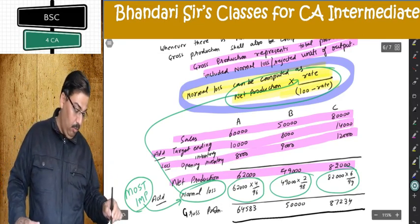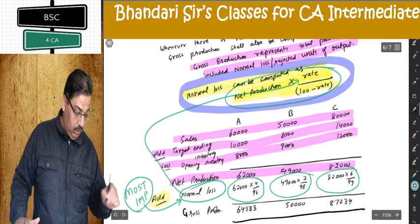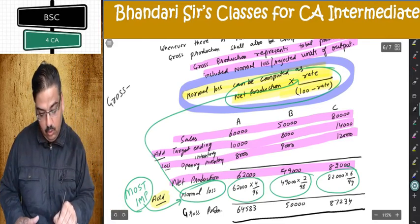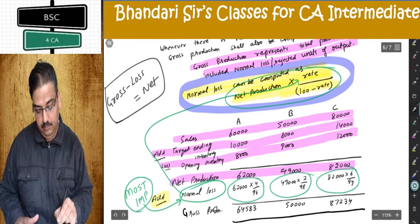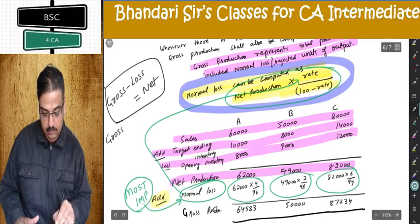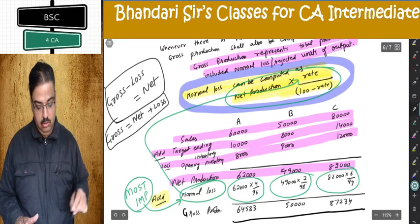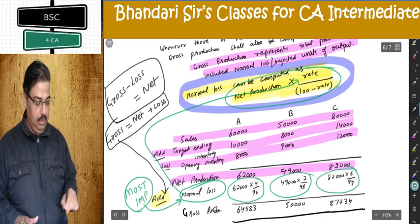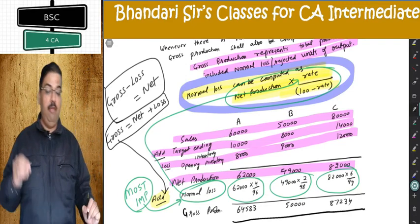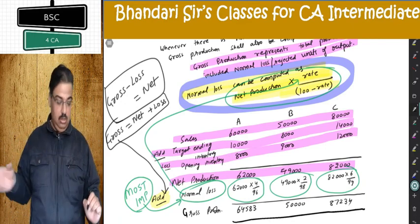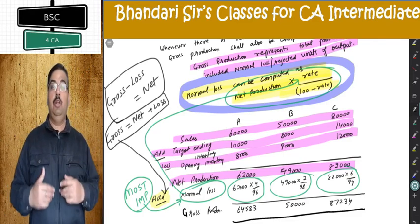Gross production comes to approximately 64,583; 50,000 exact; and 87,234 — approximated to nearest units since fractions are not allowed. This is the gross production. So you can understand this different concept which applies when normal loss is given in the question.